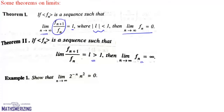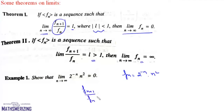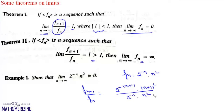Now let us take up an example. Show that limit n tends to infinite of 2 to the power minus n into n squared is equal to 0. We will write f(n) as 2 to the power minus n into n squared. Now f(n+1) upon f(n) will be 2 to the power of minus (n+1) into (n+1) squared upon 2 to the power minus n into n squared.